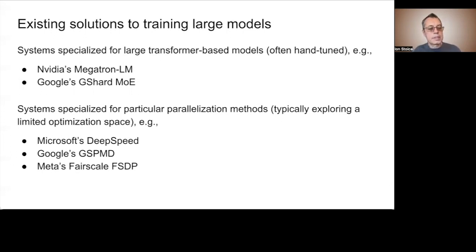Examples of such systems are Microsoft DeepSpeed, a deep learning optimization library for distributed training, Google GSPMD, which is a general and scalable parallelization compiler for common machine learning workloads, and Meta's FairScale, a fully sharded data parallel system.